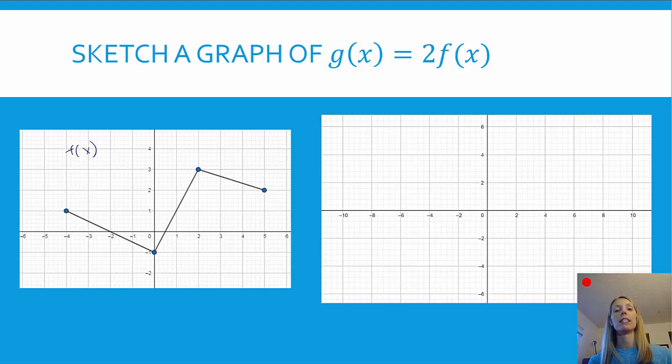And so what we should see is the graph stretched out. What this does is it stretches the y coordinate. So the x coordinates stay the same, but the y coordinates get doubled. So here we have the ordered pair negative 4, 1. In g(x), we're going to double the y coordinate. So it's going to map to negative 4, 2 up here.